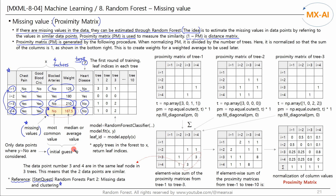First, set the initial values for the missing values. For categorical data, the most frequent value is used as the initial value. The target class of data point 4 is 'no', so the initial value is set to 'no', which is the most frequent category value among the data points whose target class is 'no'. For continuous numeric data, set the initial value to the median or average value. Similarly, the median or average is also calculated for the values of data points where the target class is 'no'. Since data point 4 has a target class of 'no', we only use data points where Y is 'no'.